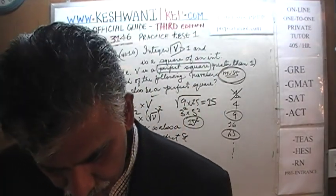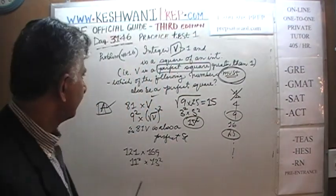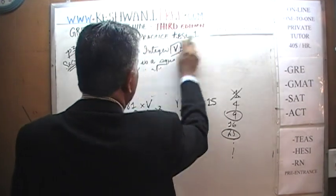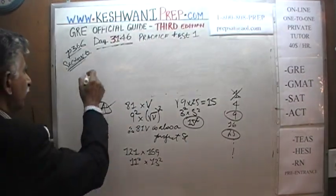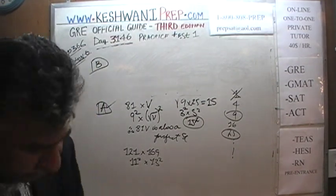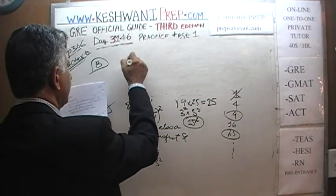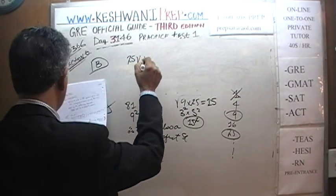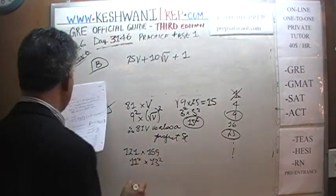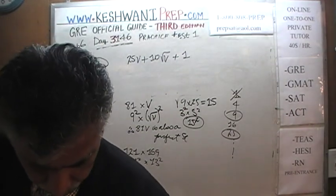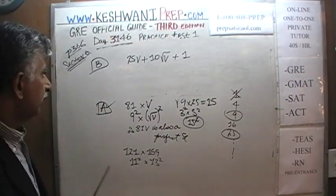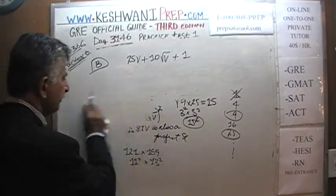Let's look at statement B. Keep in mind that V is a perfect square greater than 1. Statement B asks: is this quantity a perfect square — 25V plus 10 times the square root of V, plus 1? Let's try plugging in some numbers and see what happens. V cannot be 1; it has to be more than 1 — so it's either 4, 9, 16, 25, 36, or any perfect square. Let's try the smallest one.